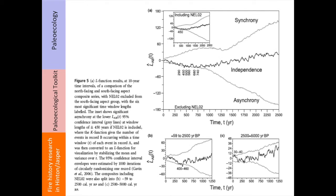Then we can start to compare these records with one another. This is a comparison of lakes on north-facing aspects versus lakes on south-facing aspects, and how well those records agree with one another going back in time. What we found was they don't agree — they fall into an area of asynchrony for a lot of the time periods examined. When the north-facing slopes would burn, those south-facing slopes wouldn't be burning. We were then able to tease out what's going on with respect to climate that may be driving these differences between north-facing and south-facing aspects.